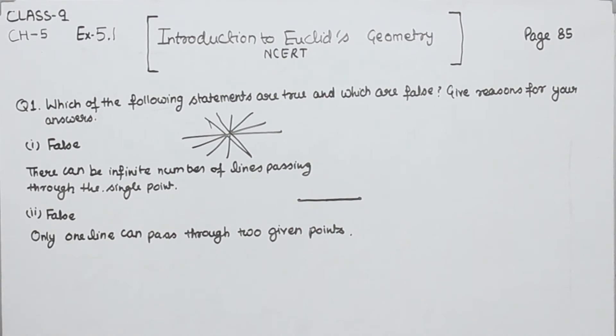Now, come to the third one. A terminated line can be produced indefinitely on both sides. This one is true.